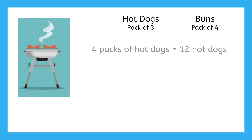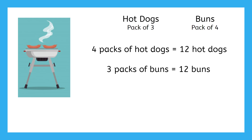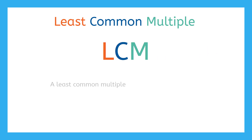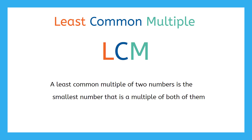Lucy determined she needed four packs of hot dogs and three packs of buns to get enough for all the buns. This is because three and four have a least common multiple of twelve. So what is a least common multiple? Maybe you've seen it before as LCM. The least common multiple of two numbers is the smallest number that is a multiple of both of them.